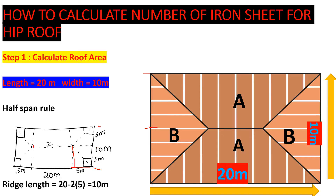Our ridge length goes from one point to the other along the top. The entire length is 20 meters, but we subtract the two half-spans: 5 + 5 = 10, and 20 − 10 = 10. So our ridge length is 10 meters.